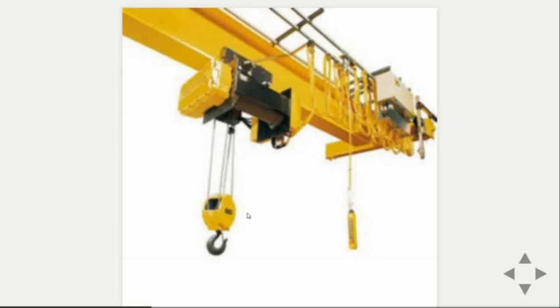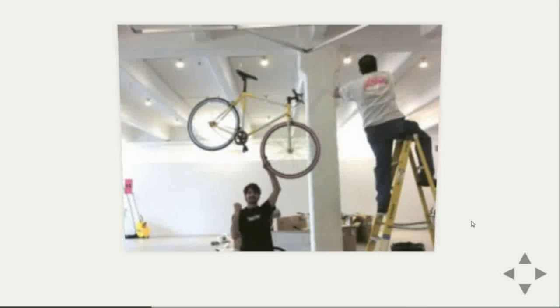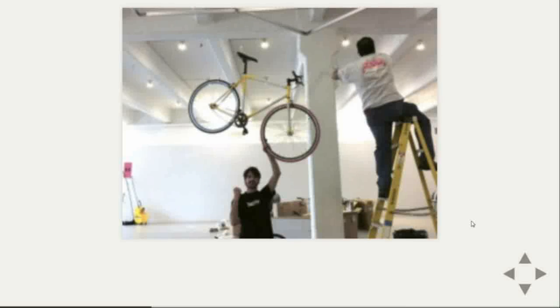Now let's talk about hoisting. Hoisting is actually a mechanical terminology. In factories they use a pulley and hook to raise stuff up to the ceiling so it can be seen from anywhere in the factory. You might have done something similar in winter when you raise your bike to the ceiling — you can see the bike from anywhere in the room.